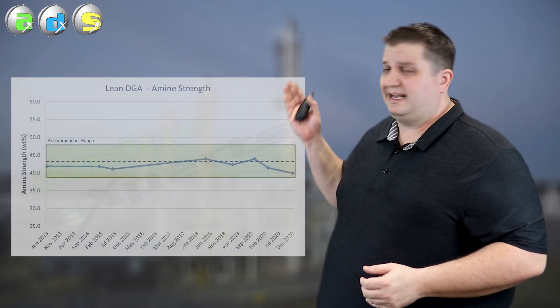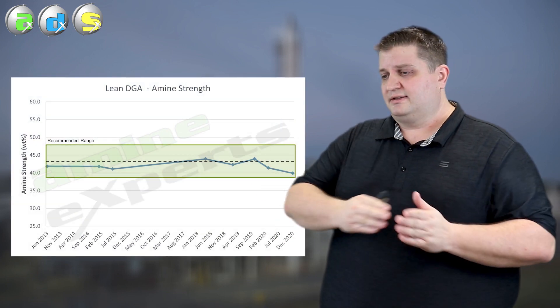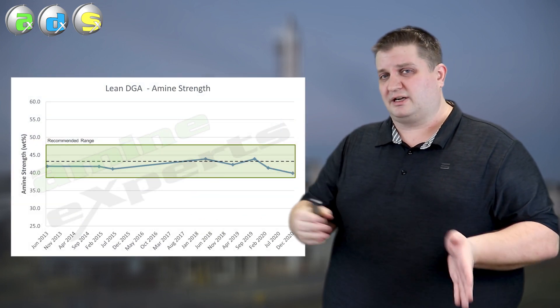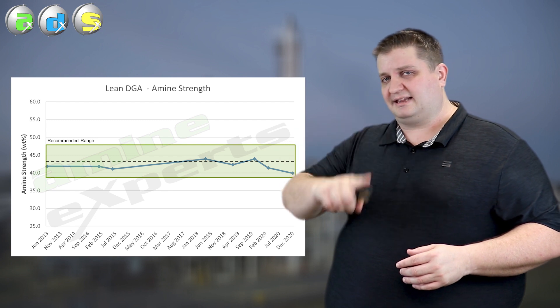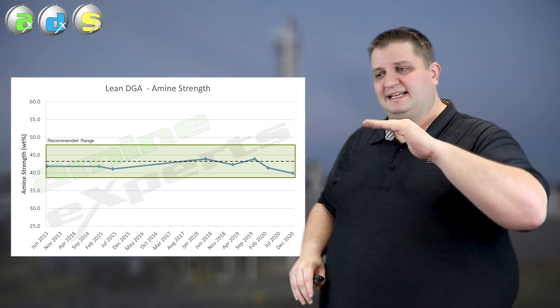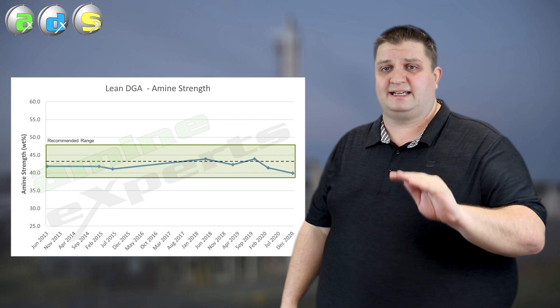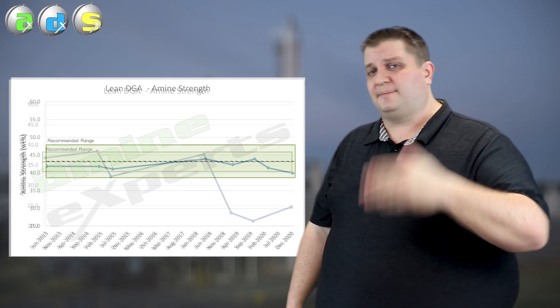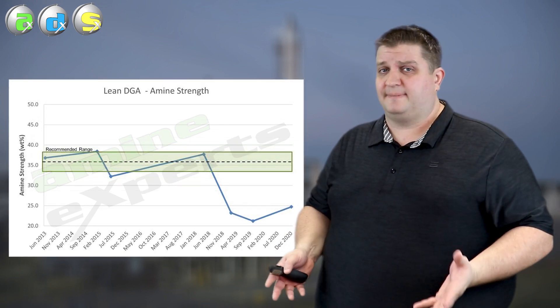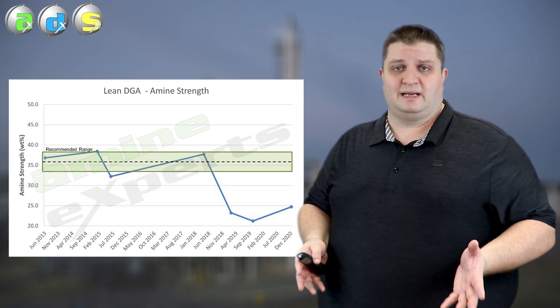As a part of that full analysis then you can go through and you can trend. So like we see here with this amine strength, over the period of a couple months or a couple years even you can see exactly how the amine trend is flowing up and down and staying nicely within that range where you want to keep it. If you start seeing sharp changes well you know that you're having a lot of upsets in your plant that you need to remedy right away.